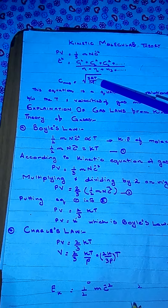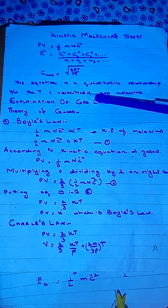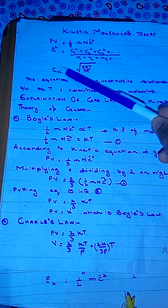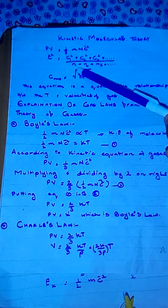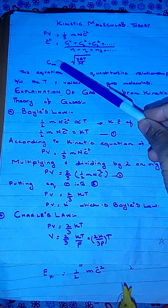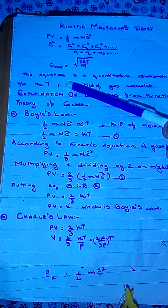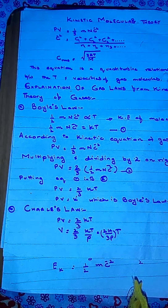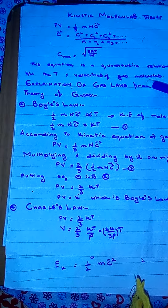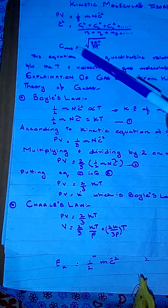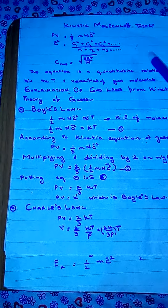C̄² is the average of the square of all possible velocities. When we take the square root of this, it is called the root mean square velocity. C_rms = √(3RT/M), where M is the molar mass of gas molecules and T is temperature. This equation shows a quantitative relationship: higher the temperature, greater the velocity — a direct relationship between these two parameters.